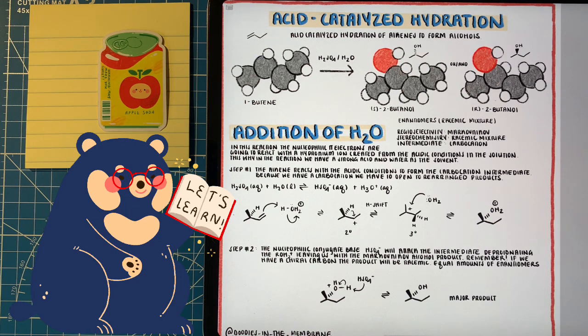In this case, we have acidic conditions because we have a strong acid and water which creates hydronium, which our alkene is going to react with. The reason why there's two products in the reaction above is because we had a chiral carbon in the first example.